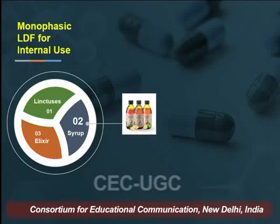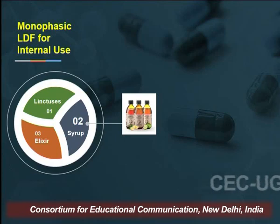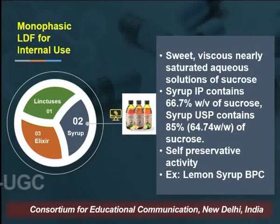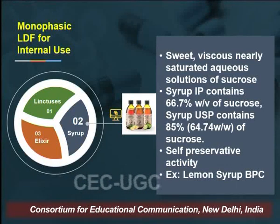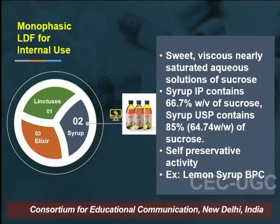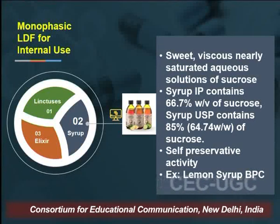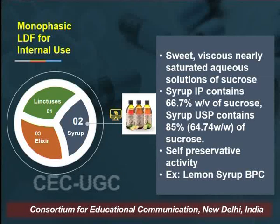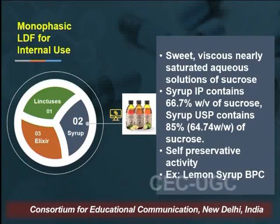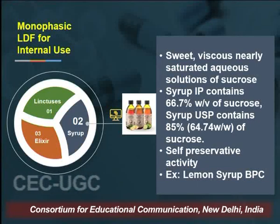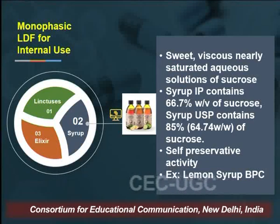The next categorization under monophasic liquid internal use includes syrups. Syrups are sweet, viscous, and nearly saturated aqueous solutions of sucrose. Syrup official in the Indian Pharmacopoeia contains 66.7% weight by volume of sucrose; in the United States Pharmacopoeia it is 85% or 64.7% weight by weight of sucrose. Syrups have the ability of self-preservation. Example: lemon syrup, official in the British Pharmaceutical Codex.